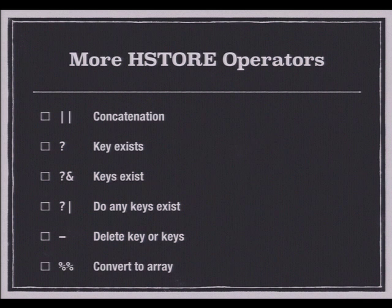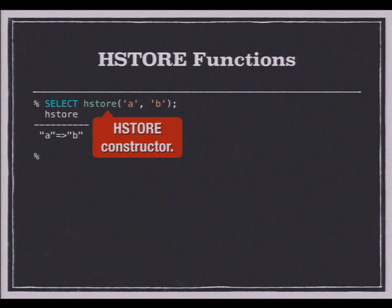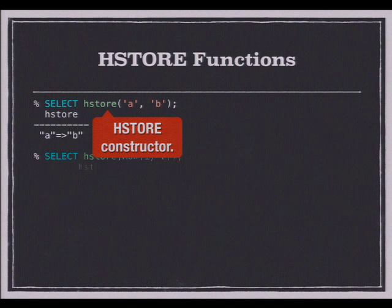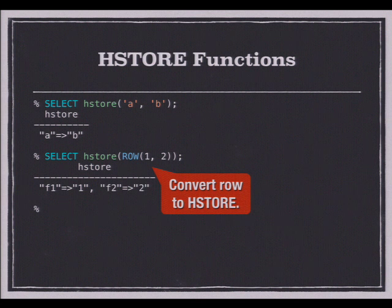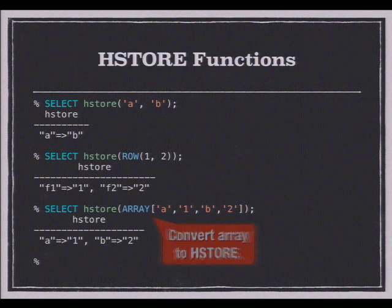You can use the double percent operator to convert an HStore to a SQL array. In addition to the operators, there are a bunch of functions. The HStore constructor takes two values and creates a single key-value pair. You can even pass it a table type or row type and it will convert to HStore — even just passing a row with no column names will name the first value F1, the second F2. You can also pass it an array of key-value pairs.